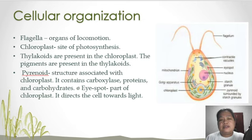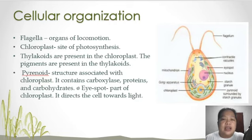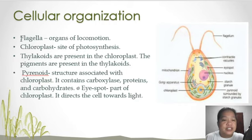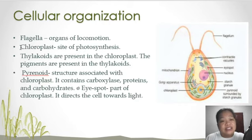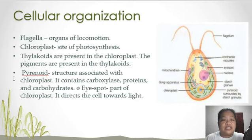In terms of cellular organization, algae have similarities with all other eukaryotic organisms. Some species may have flagella as organs for locomotion. They have the chloroplast as the site for photosynthesis, and they have thylakoids present in chloroplasts where these pigments are located. There is also the pyrenoid structure associated with chloroplasts, which contains carboxylase proteins and carbohydrates, depending on the group of algae.